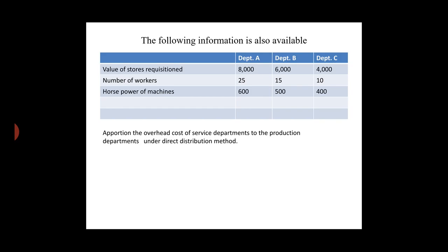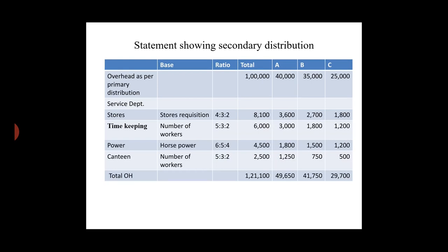Overhead distribution is based on value of stores, number of workers, and horsepower. Statement showing secondary distribution — production department primary distribution totals: Department A 40,000, B 35,000, and C 25,000. Store department uses stores requisition as the basis for distribution to production departments.